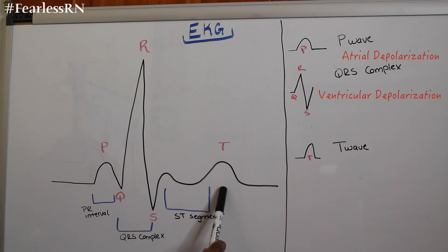And then we have the T wave. The T wave is ventricle repolarization. And remember, repolarization means relaxed. So the ventricles are now relaxed.